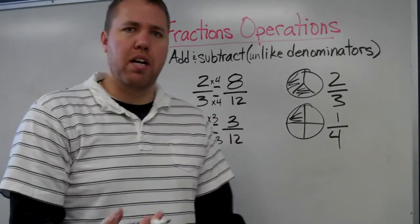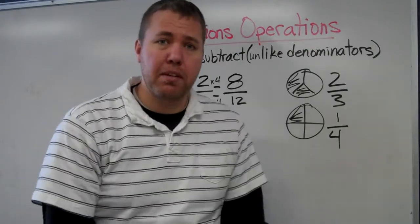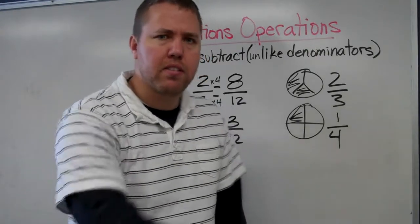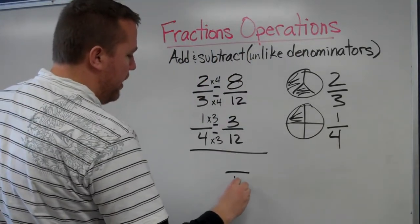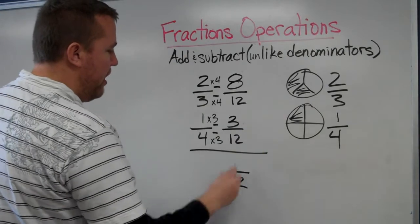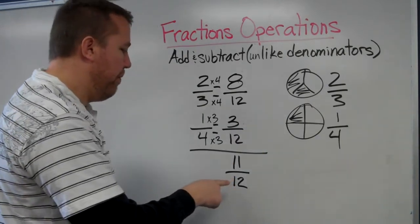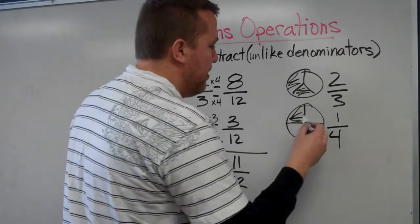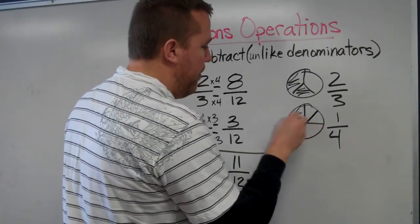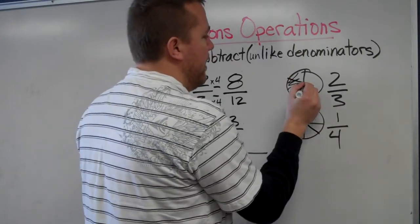Now I'm adding fractions that have the same denominator. Simple - let's just add the numerators. We're talking twelfths. Eight plus three equals eleven. Do I need to simplify? No, I don't. That's fantastic. Now let's look at eighths and sixths.